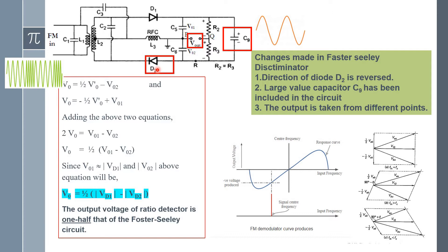As you can see, diode D2 is reversed. The second change is: the large capacitor C9 has been included in the circuit — C9 is the extra capacitor added. Then, generally we take the output across the two output sides, but here we are taking from a different point in between the capacitor and resistor. These are the three changes made in the ratio detector to achieve amplitude limiting operation and also detection of the message signal from the FM modulated signal.